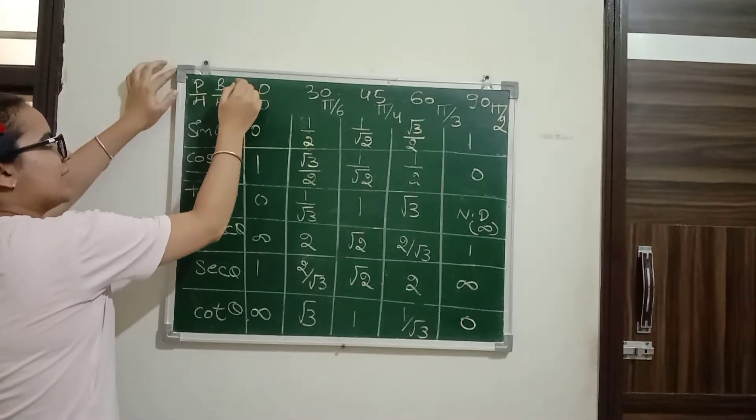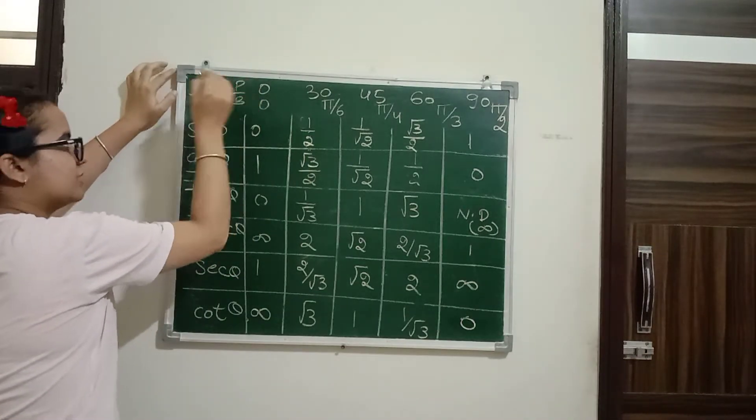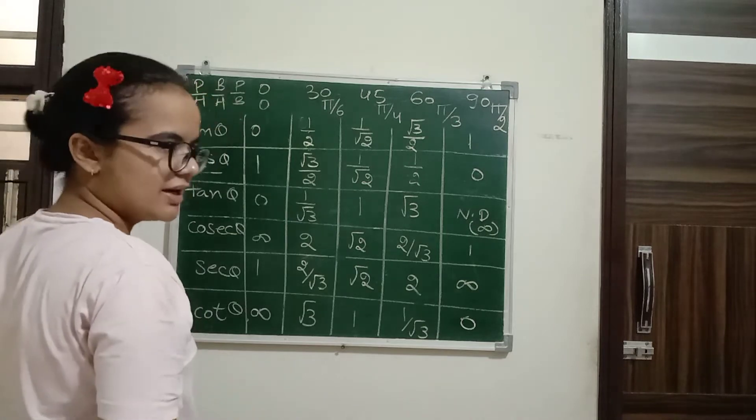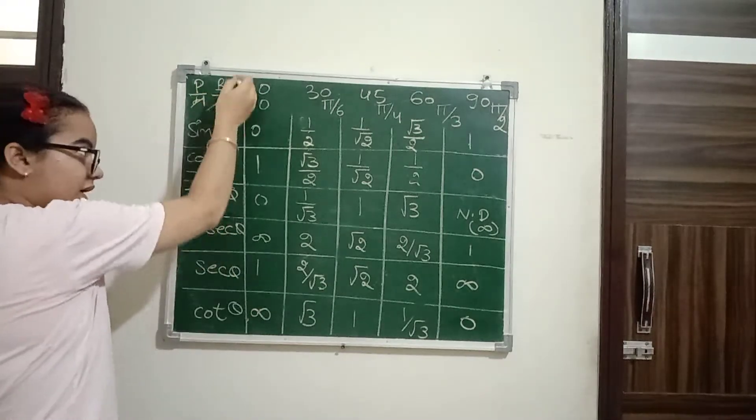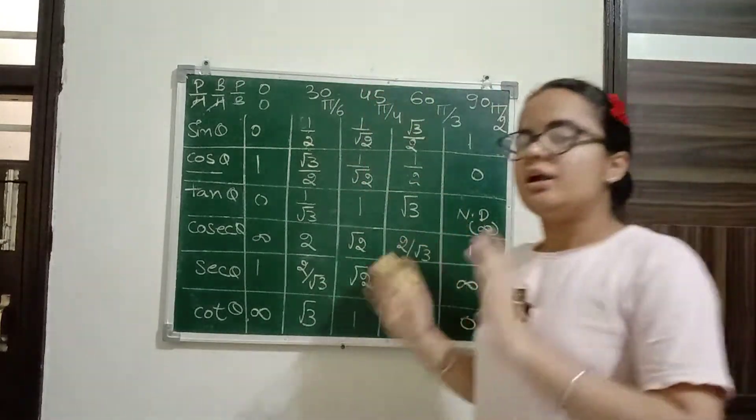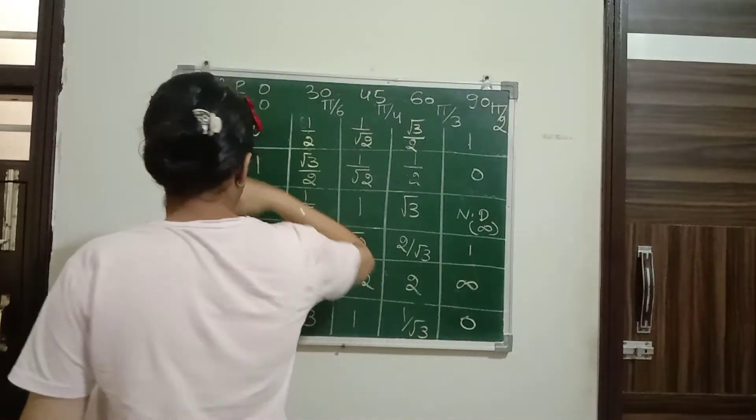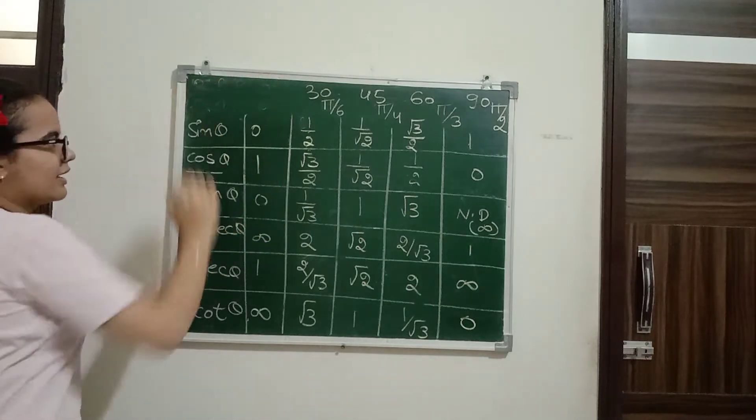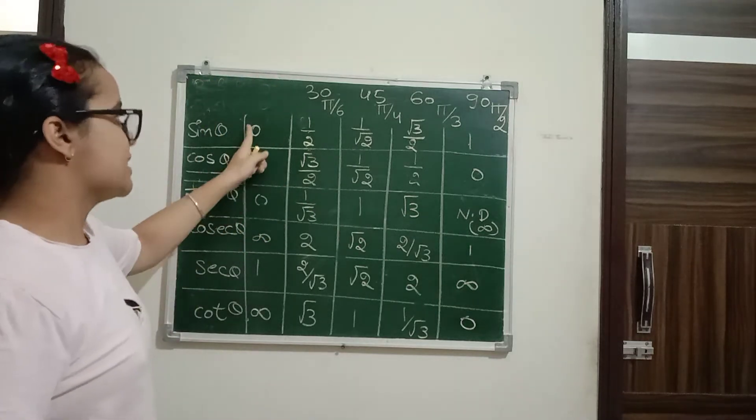We know that tan theta is p upon b. So when we divide sine by cos, h cancels with h, giving us p upon b. So sine theta divided by cos theta equals tan theta. We divide sine by cos.